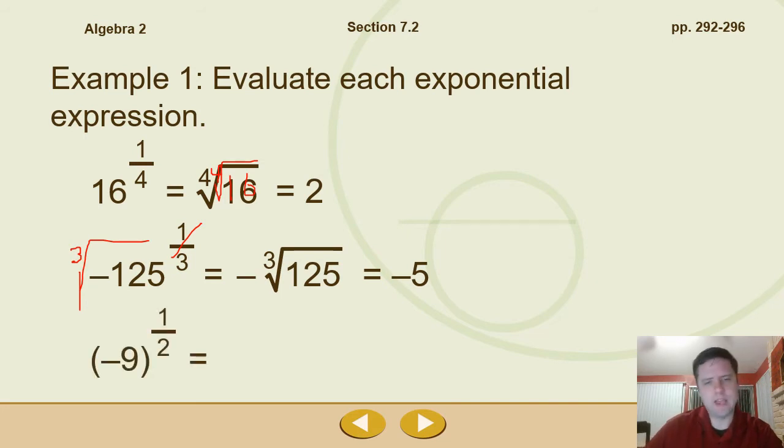Or what about negative 9 to the 1/2? Well, that's the square root of negative 9. Now, what's the problem with that? Remember, we can't take the even root of a negative value for the radicand. So that's going to be just 3i. Remember, it won't be a real root. It'll be an imaginary number here. So we take the square root of 9, get 3, and then the square root of negative 1, we write i.